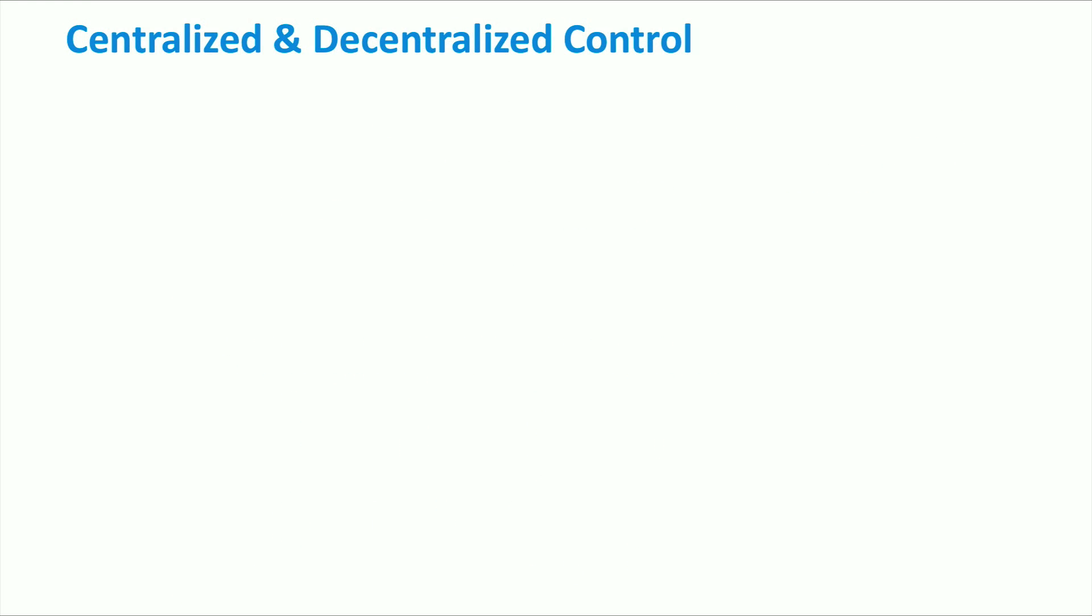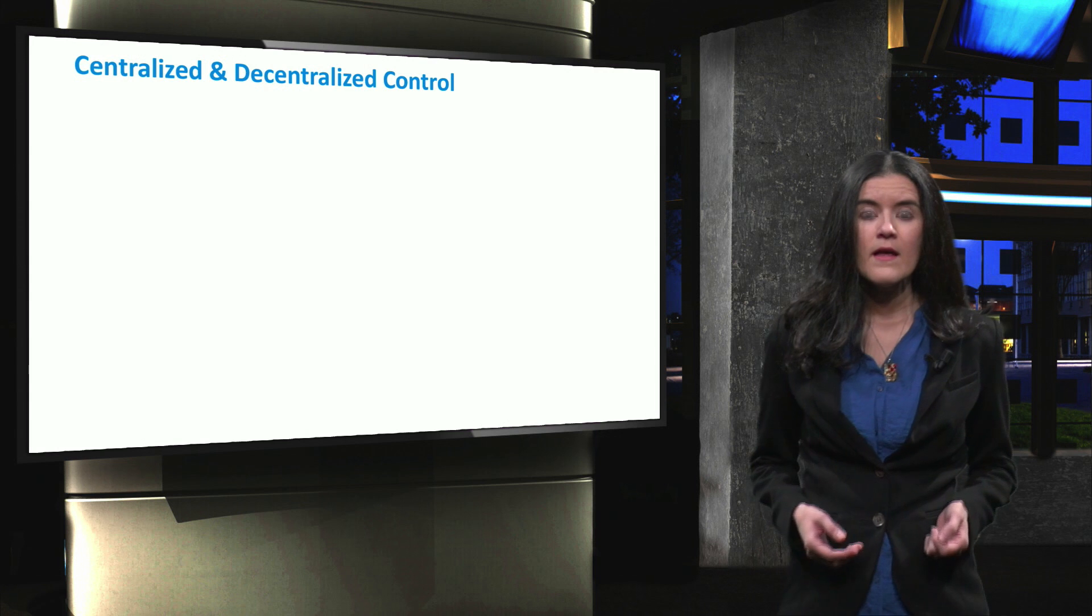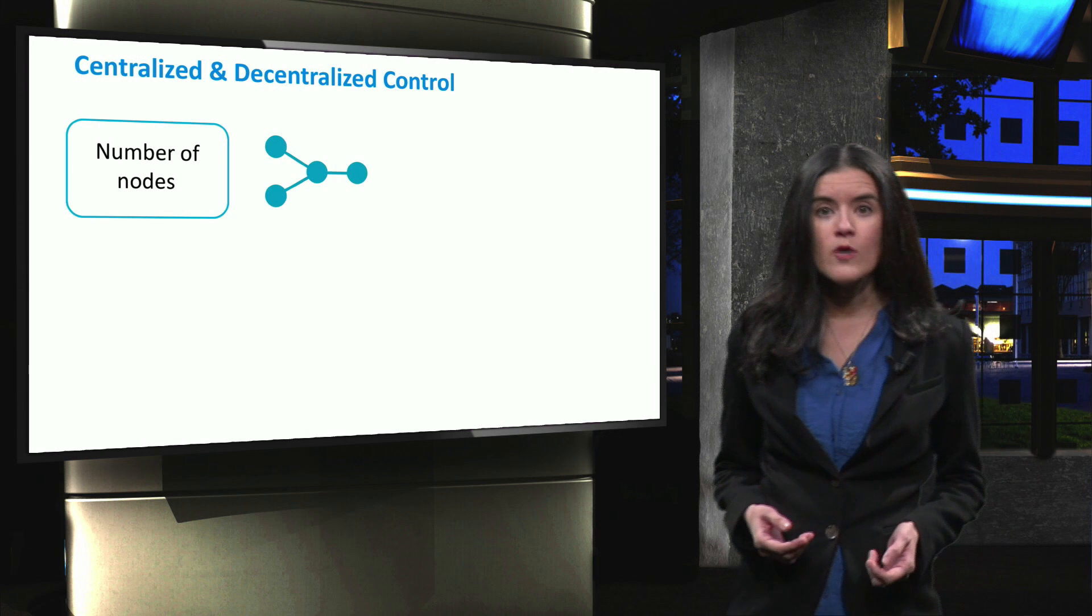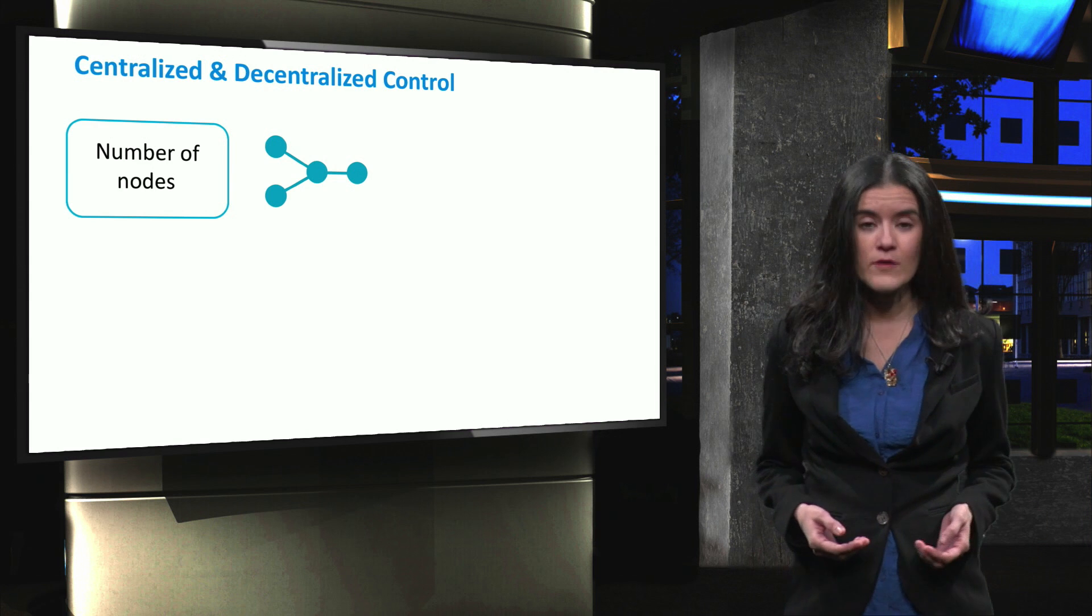The performance of the control algorithms depends on the following four key attributes. First, the number of nodes. The distributed generators and controllable loads that make up the microgrid affect the complexity and computational time as the number increases.